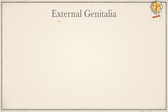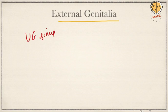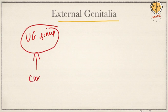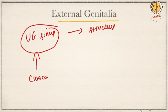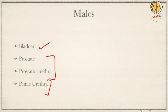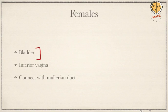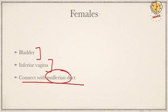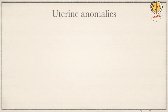For external genitalia, the key structure is the urogenital sinus, which develops from the cloaca. In males, the upper part of the urogenital sinus forms the bladder, the middle part forms the prostate and prostatic urethra, and the lower part forms the penile urethra. In females, the upper part forms the bladder and the pelvic portion forms the inferior vagina, also connecting with the Müllerian duct.